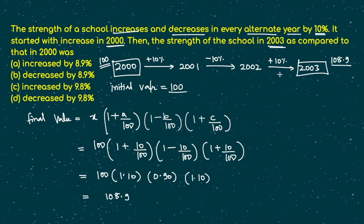So the value has increased. Options B and D are incorrect. The increase is 8.9 over a base of 100, which means it increased by 8.9 percent. So the correct answer is option A — increased by 8.9 percent. Things became easy because we took the initial value as 100; if we had used another number we would have had to convert to percentage afterward.